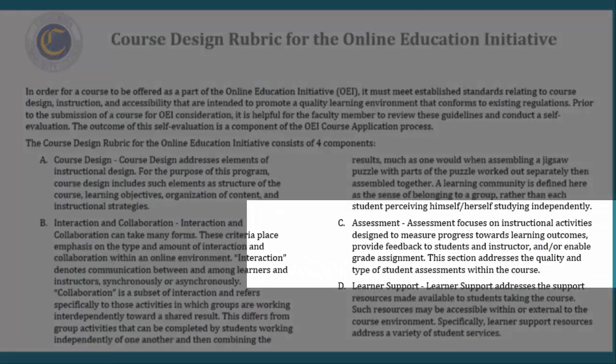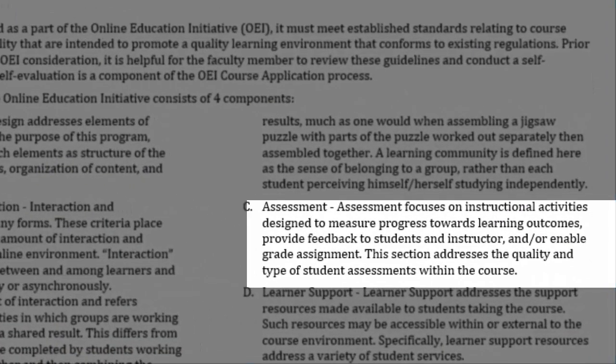Section C is all about assessment. Specifically, Section C reads: Assessment focuses on instructional activities designed to measure progress toward learning outcomes, provide feedback to students and instructor, and/or enable grade assignment. This section of the rubric looks at the quality and type of student assessments within the course, and if the assessments being used are actually measuring what they are meant to measure.